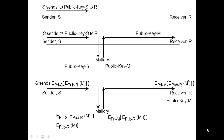Sender S sends its public key to R. What happens is Malorie, a bad person, captures the public key on the way. So now Malorie has the public key of S. What Malorie does is send her own public key — public key M — to the receiver. As I told in class, using IP spoofing we can make receiver R believe that the message came from S the sender. So what the receiver R has now is the public key of M, not the public key of S.